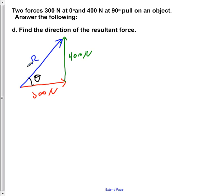In order to do that we could use sine, cosine, or tan of theta. I'm going to use tan of theta which is equal to the opposite, which is 400 N, over the adjacent which is 300 N.